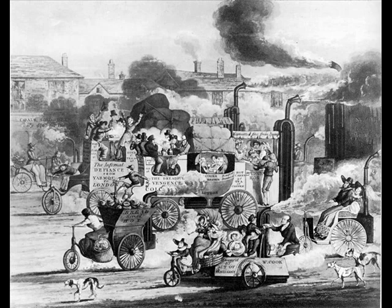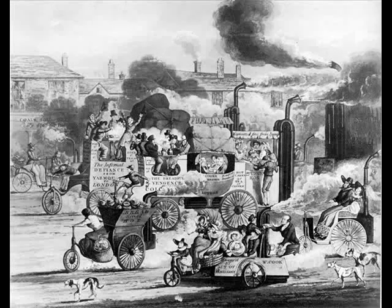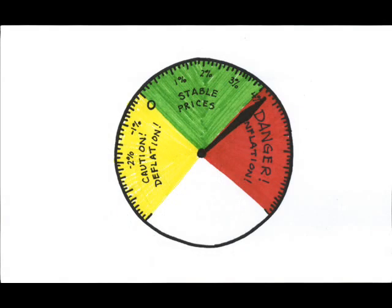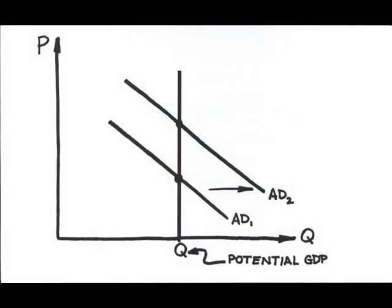Even if demand should rise, there aren't any more resources so you wouldn't be able to get any more output, just inflation. This is why the classical model depicts the aggregate supply as a vertical line at potential or full employment GDP.